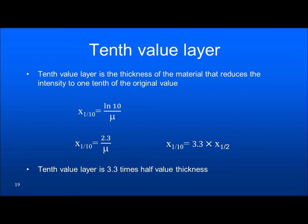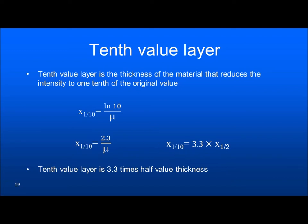The tenth value layer (TVL) is the thickness of material that reduces intensity to one tenth of the original value. It is also very important in radiation protection, particularly in shielding calculations. Tenth value layer = log(10)/μ = 2.3/μ. And there is a relationship: TVL = 3.3 × HVL. This is a very important relationship for shielding calculations.